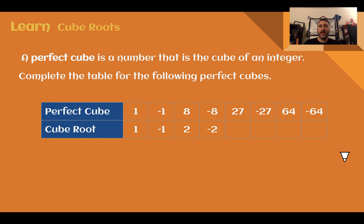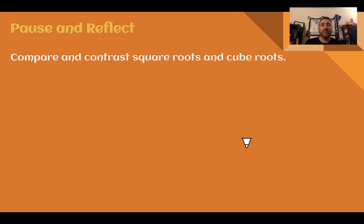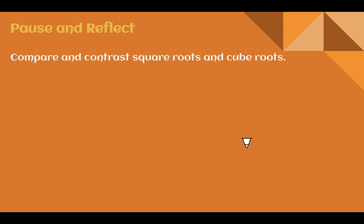A perfect cube, just like a perfect square, is a number that is the cube of an integer — to the third power. 1 cubed is 1; negative 1 cubed is negative 1; 2 cubed is 8; negative 2 cubed is negative 8; 3 cubed is 27; negative 3 cubed is negative 27; 4 cubed is 64; negative 4 cubed is negative 64. One main difference between square roots and cube roots: square roots of positive numbers had two answers, while cube roots have only one value, matching the sign of its perfect cube. Take a minute to pause and reflect, comparing and contrasting square roots and cube roots.